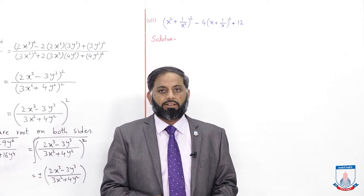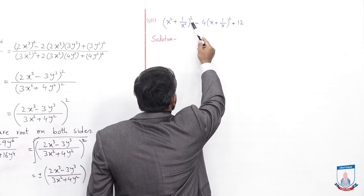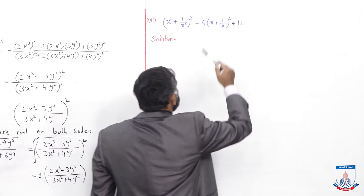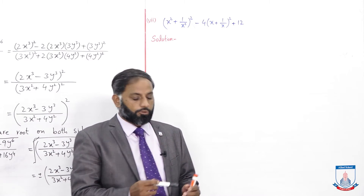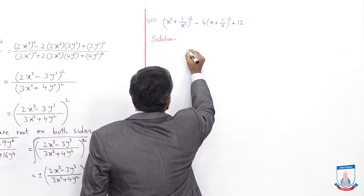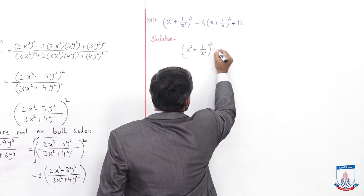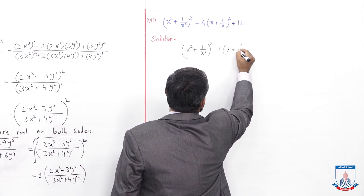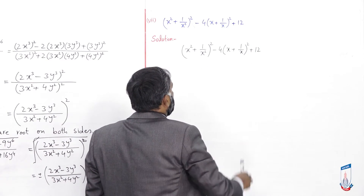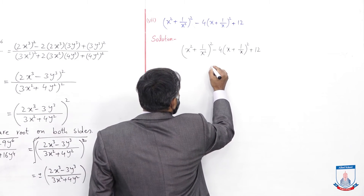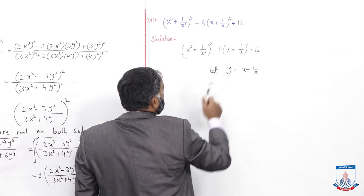अब question 1 का part 7 solve करेंगे। Given expression है: (x²+1/x²)² - 4(x+1/x)² + 12। यह बाहर से perfect square नहीं बन रहा। इसे solve करने के लिए हमें let करना पड़ेगा। अगर हम (x+1/x) को y let करते हैं और दोनों sides पे square लें तो x²+1/x² की value हमें मिल जाएगी।